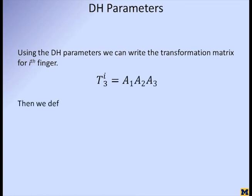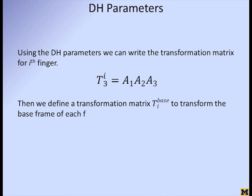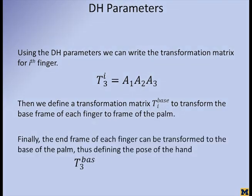Once DH parameters are found, the transformation matrix for each finger can be defined. Then, the base frame of each finger is transformed to the base frame of the palm. The final transformation matrix for each finger then defines the pose of the hand.